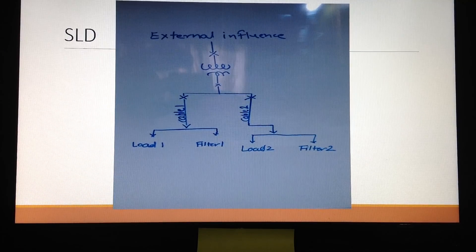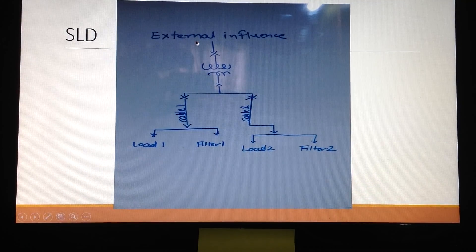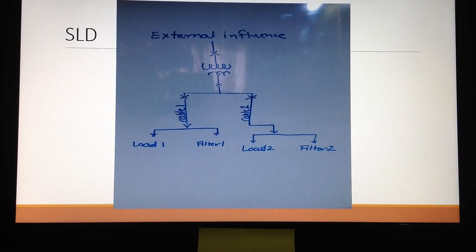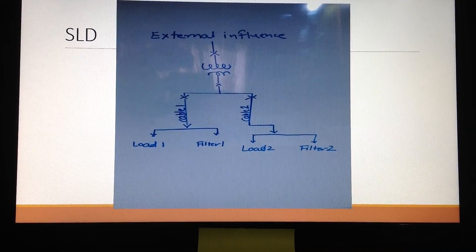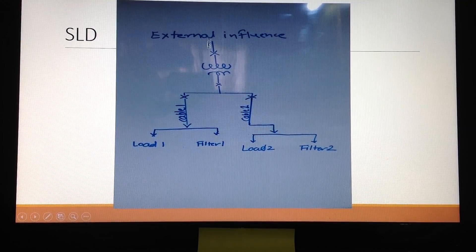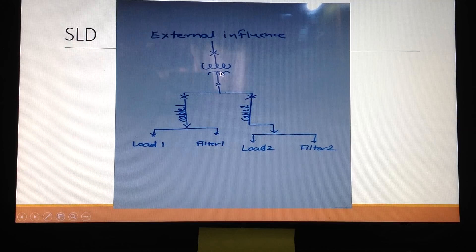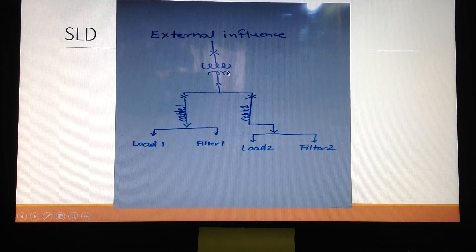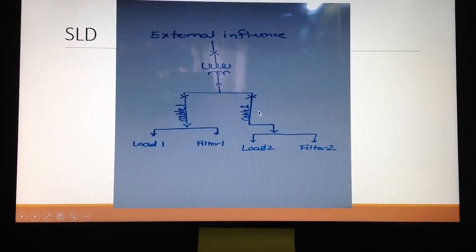This is a single line diagram of a simple or basic power system. Here we have external influence — the utility or supply side network system. Then we have a transformer feeding to load center 1 and load center 2 through cable 1 and cable 2 respectively.